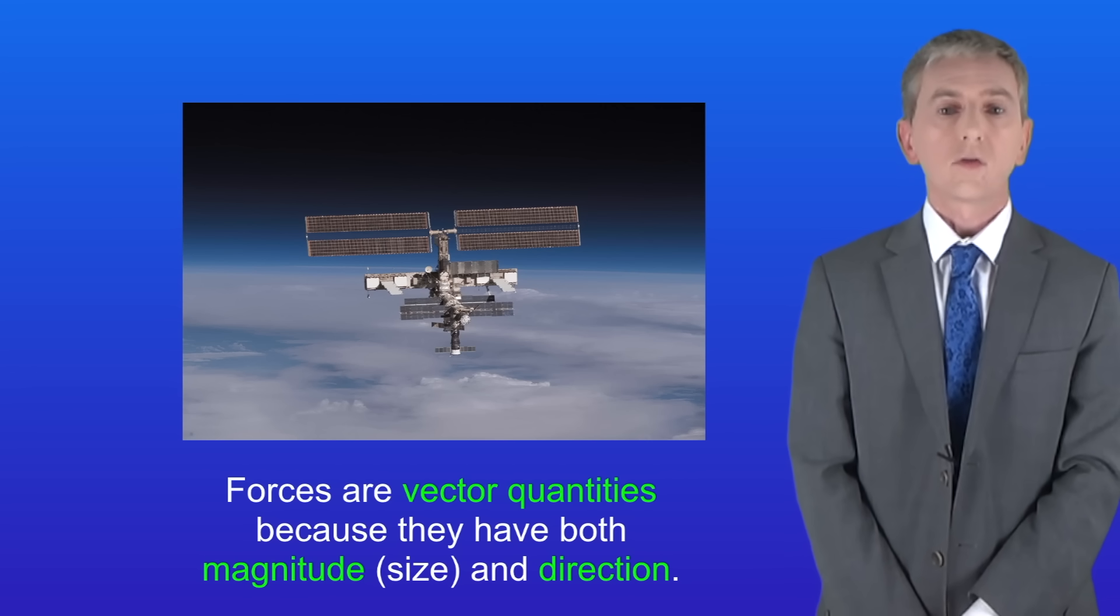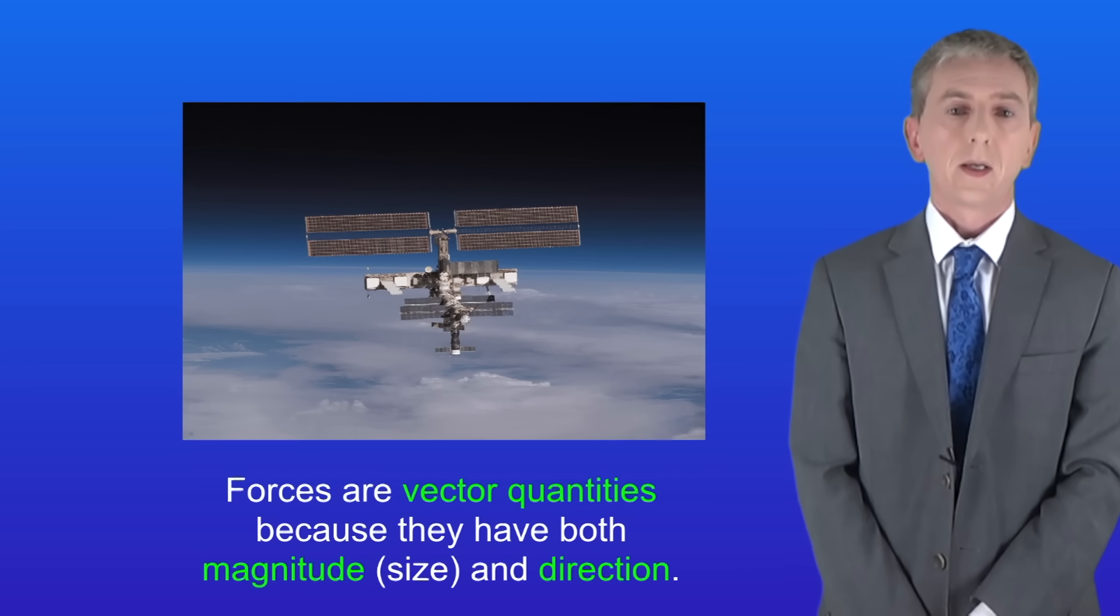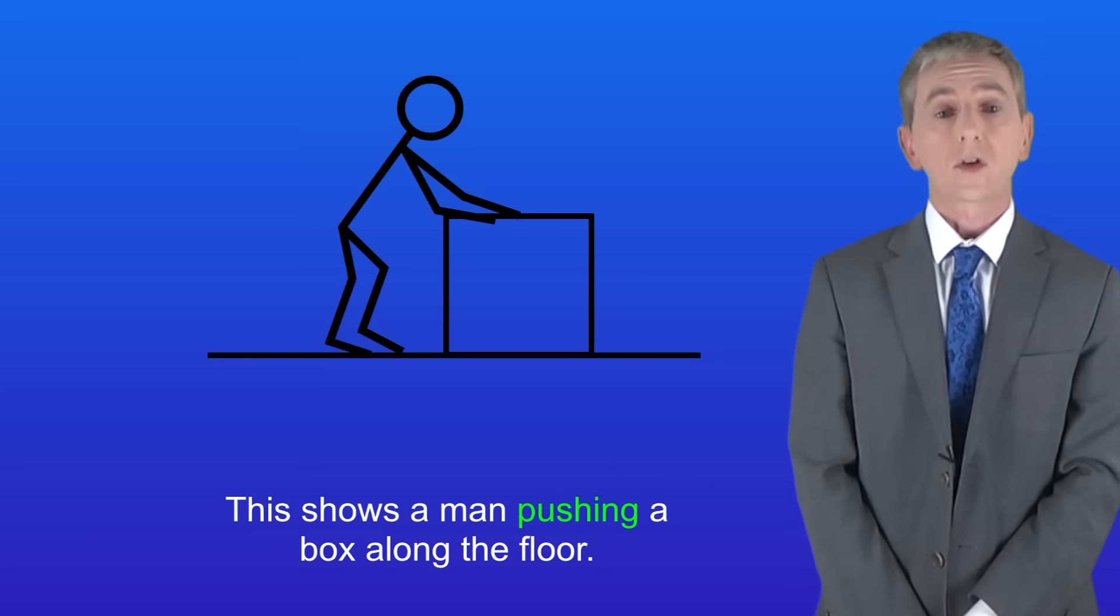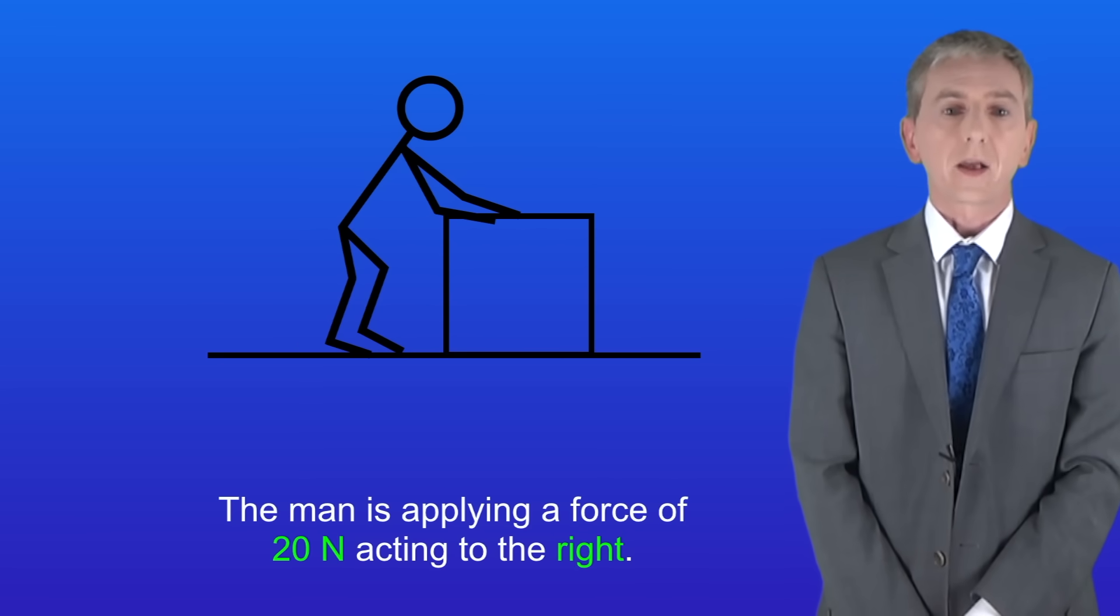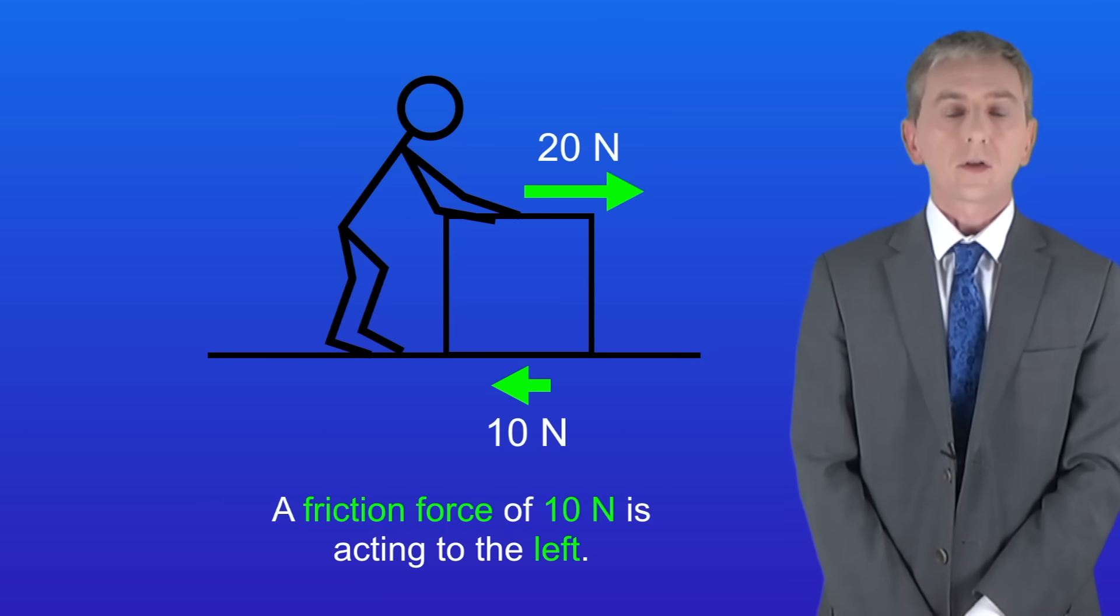So in this video we're looking at resultant forces. I'm showing you here a man pushing a box along the floor. The man's applying a force of 20 newtons acting to the right, and we can show that with this arrow. A friction force of 10 newtons is acting to the left.